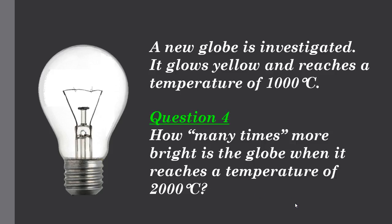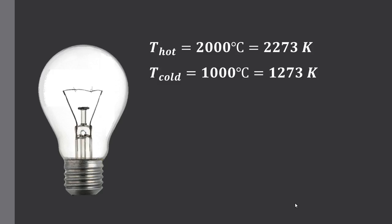Our final question is looking at a brand new globe. This brand new globe glows yellow when we have it at a temperature of 1,000 degrees Celsius. My question is how many times more bright is a globe when it reaches a temperature of 2,000 degrees Celsius. So mathematically the hot temperature is 2,000 degrees Celsius. To convert that to Kelvin we must add 273. So that reaches 2,273. Likewise the cold temperature of 1,000 degrees Celsius we must add 273 Kelvin. So that has a temperature of 1,273 Kelvin. What we're being asked here when we say how many times brighter is or how many times more powerful is the hot globe than the cold globe, we're effectively trying to work out this ratio of power hot divided by power cold.